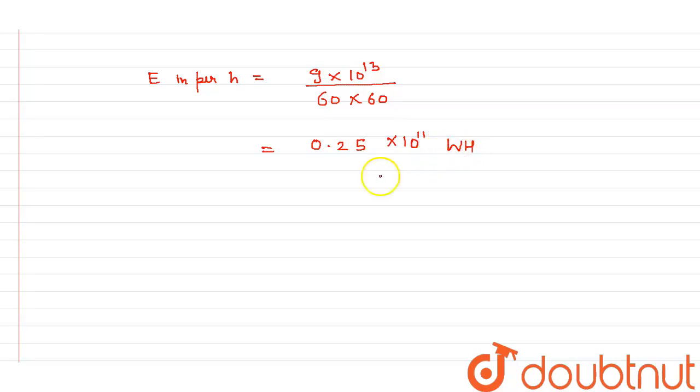If I simply say 0.25 into 10 to the power 7, that is my kilowatt hour, because the rest has been converted into kilowatt. So that means the value of energy is now coming to me as this.